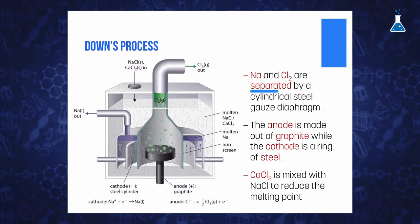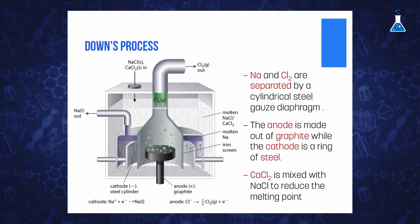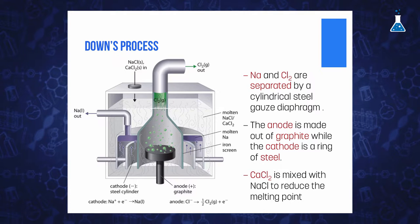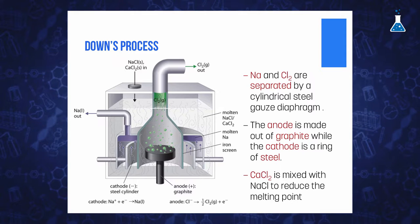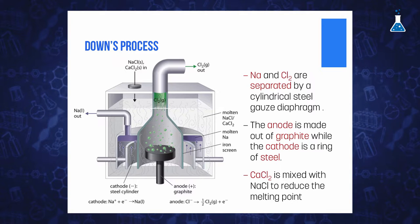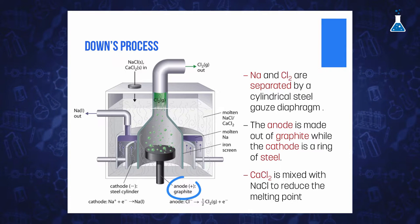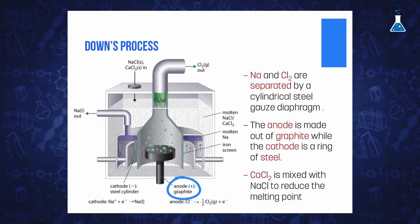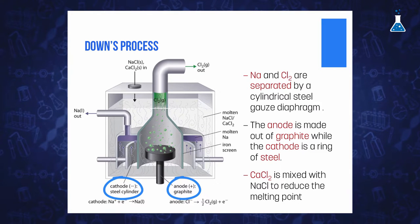It is necessary to maintain sodium and chlorine gas separated in order to avoid that they recombine again to form sodium chloride. This can be achieved by separating both electrodes by a cylindrical steel-gauze diaphragm that will keep both reactive elements apart. The positive electrode or anode is a rod made of graphite, while the negative electrode or cathode is a ring of steel.